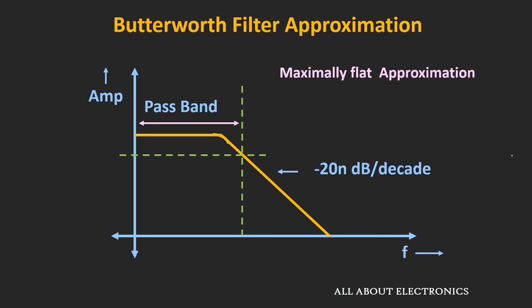The Butterworth filter has a very flat pass band and the roll-off of this filter is at the rate of 20N dB per decade. So, if you are designing a 4th order filter, then the roll-off will be at 80 dB per decade. Or if you are designing an 8th order filter, then that filter will have a roll-off at 160 dB per decade.